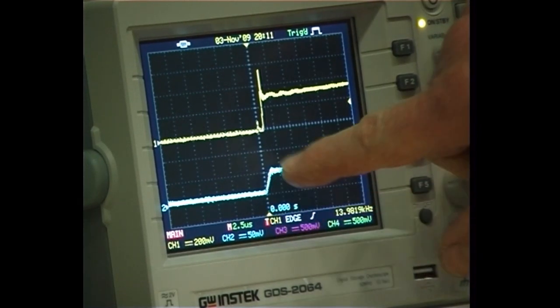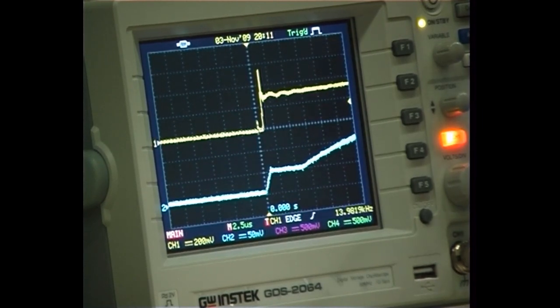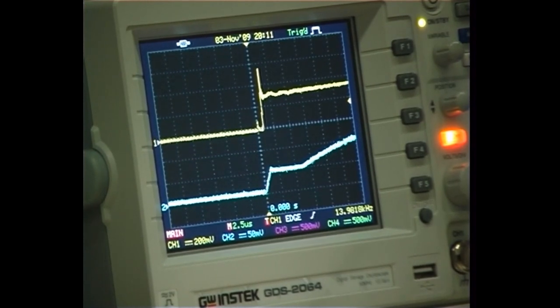So the gate waveform continues a simple exponential type of rise, a resistor into a capacitor, and the current starts to increase. And we can expand that out some more.